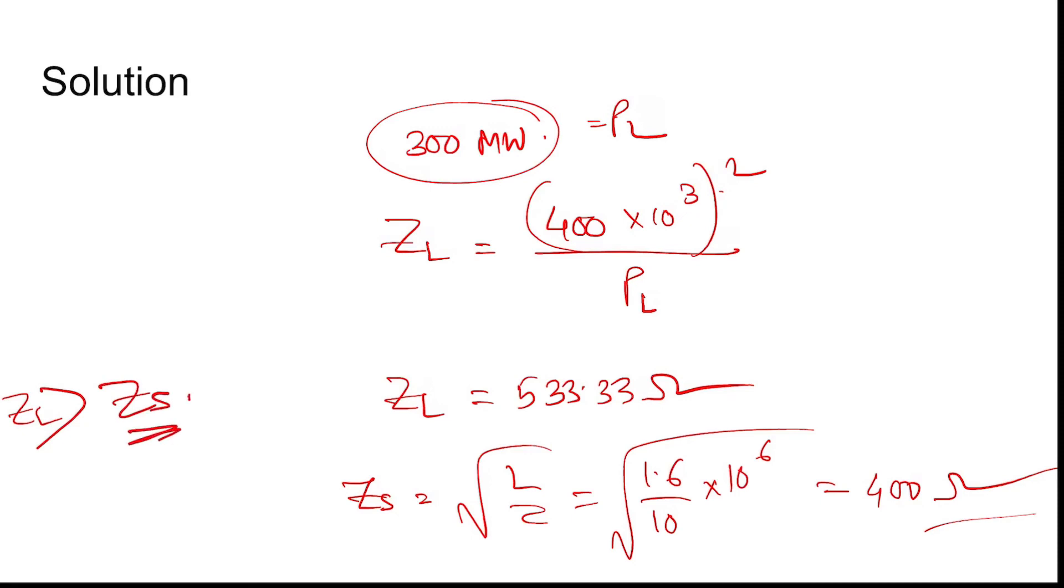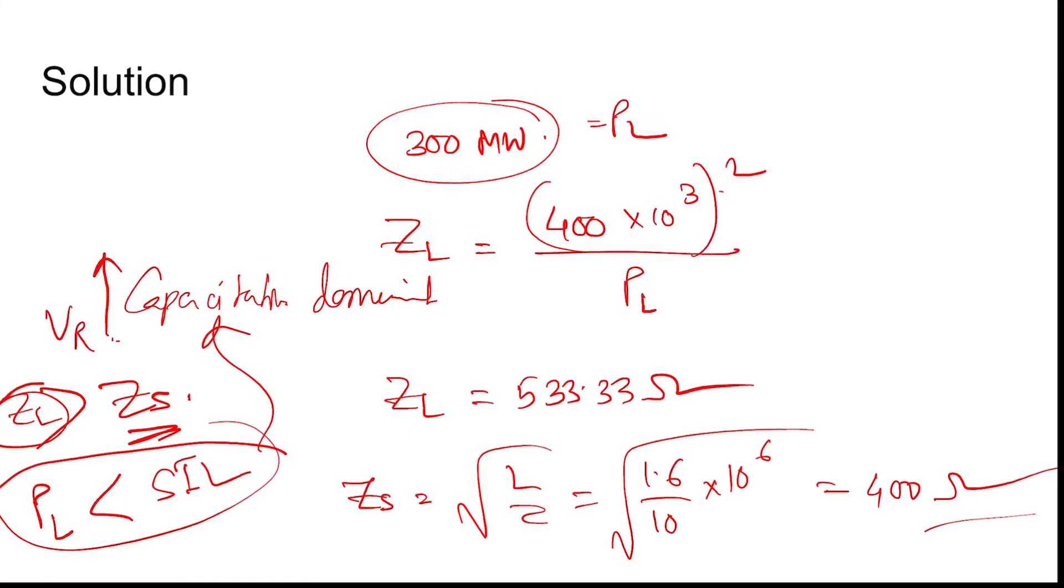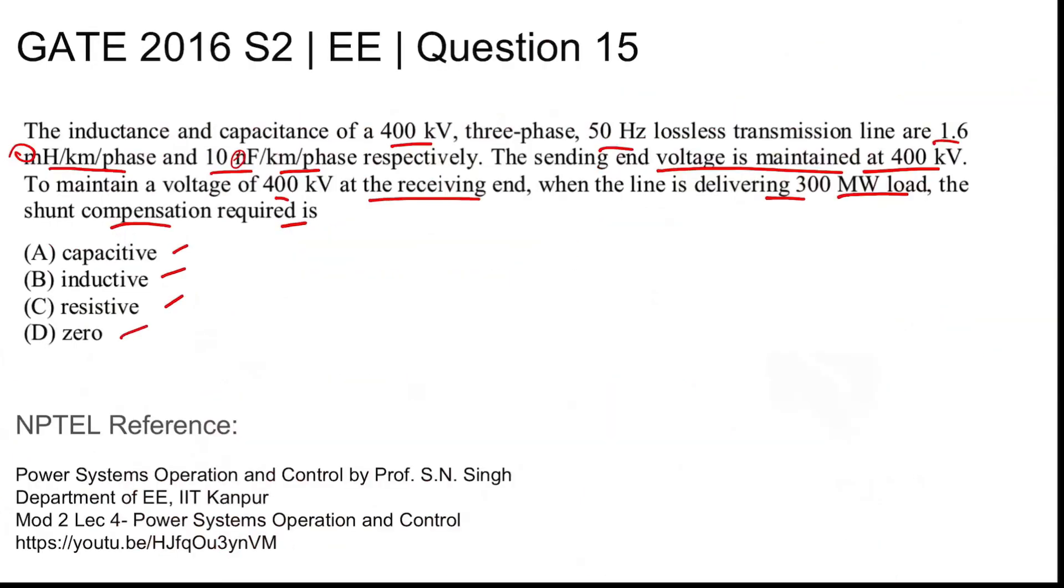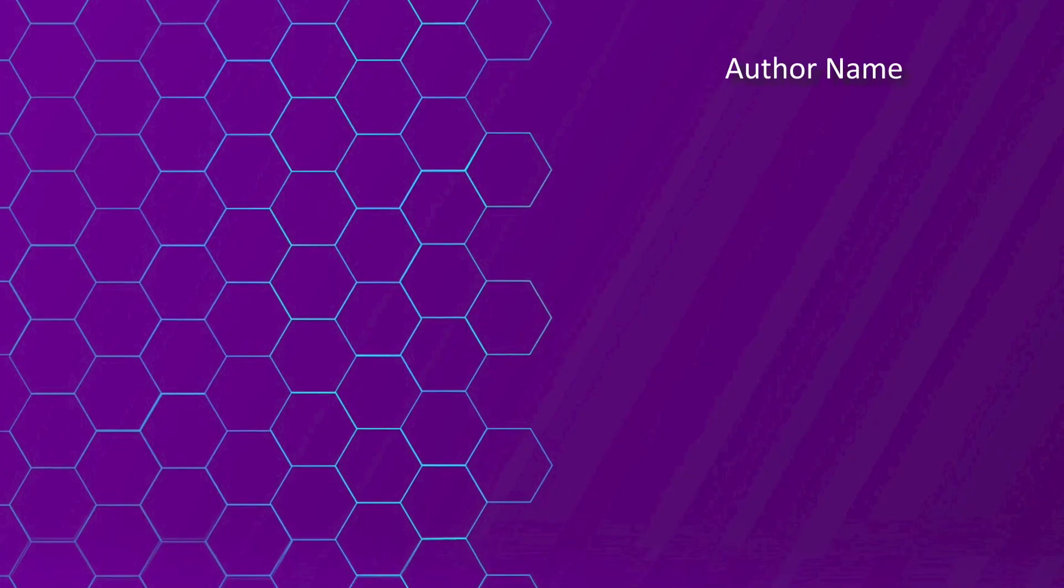Since the load impedance is more than the surge impedance, then the load actually on the line is less than the surge impedance loading. In that case, the line will be capacitive dominant, which will tend to increase the receiving end voltage. And to reduce that effect of increasing voltage, we need inductive compensation. So B is the correct answer. Thank you.